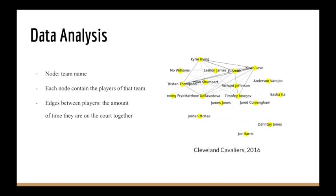For our graph classification network, we'll have team names as our node. For each node, we will contain all the players of that team. There are no edges between each node, but we will use the amount of playtime they are on the court together as the edges of the players.